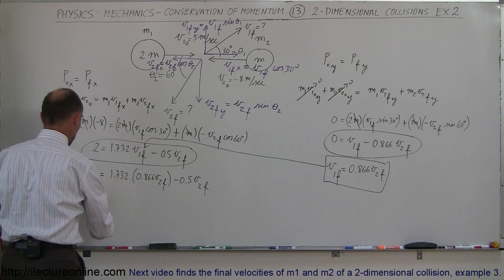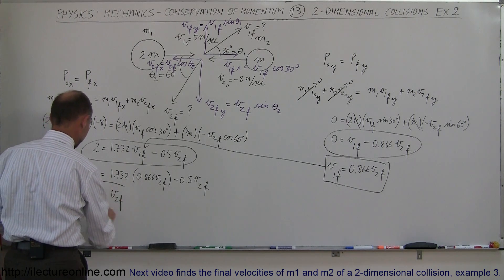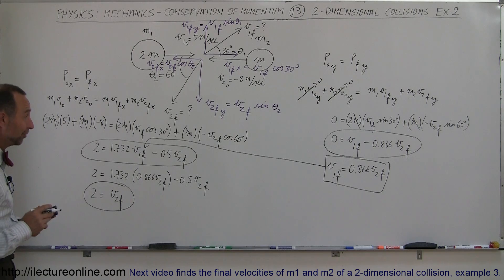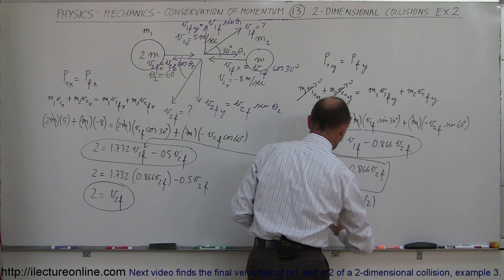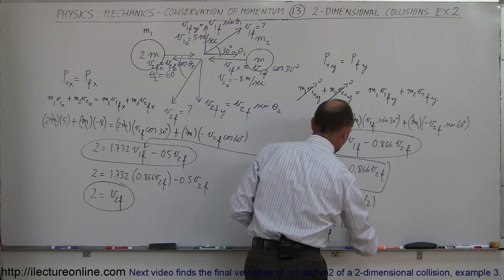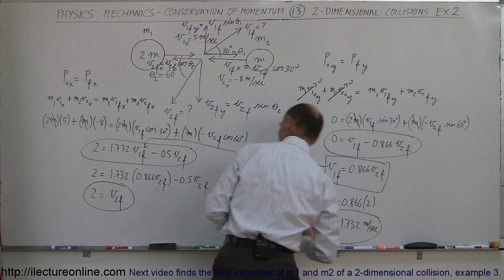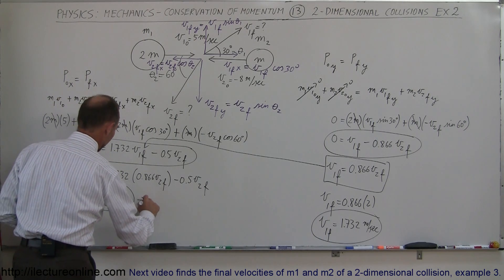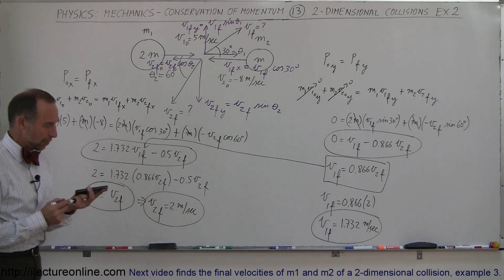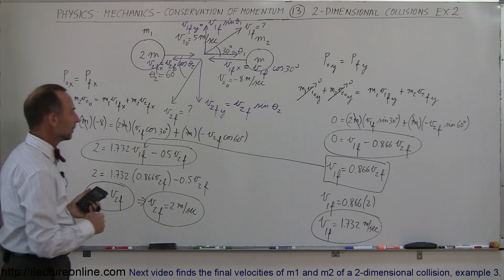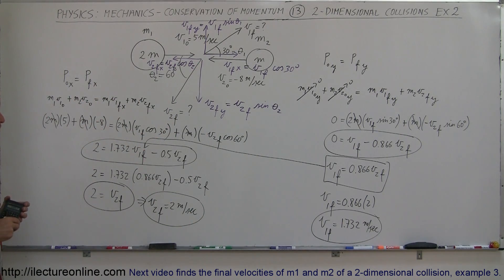That gives us 2 = v2_final, so v2 final equals 2 meters per second. Then v1_final = 0.866 times 2, which equals 1.732 meters per second. So our final answers are: v2 final = 2 m/s and v1 final = 1.732 m/s. That looks fairly reasonable — and that's how we solve a 2D collision problem using conservation of momentum.